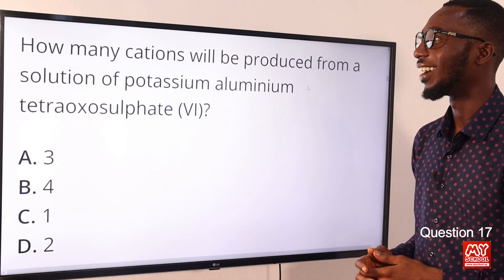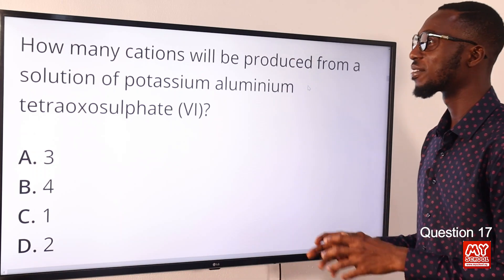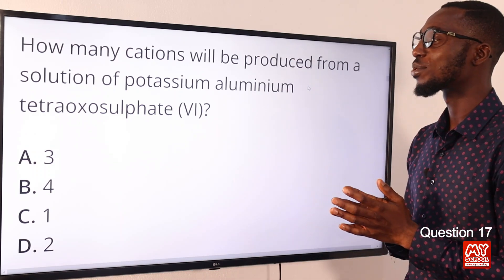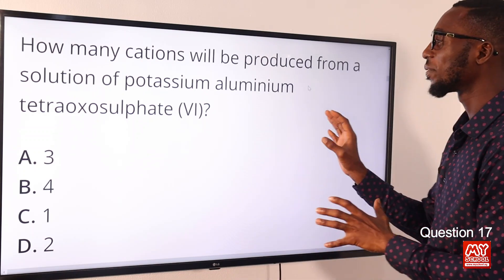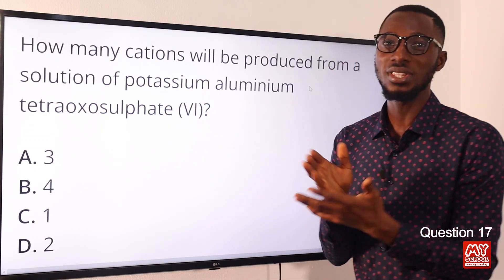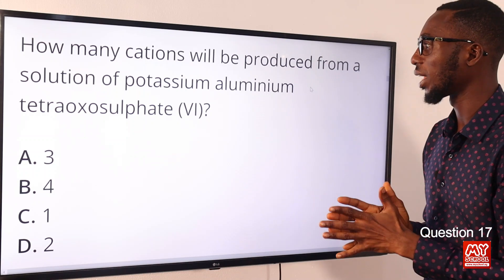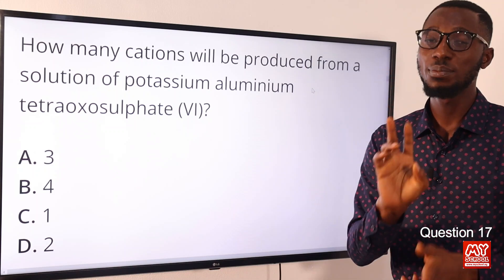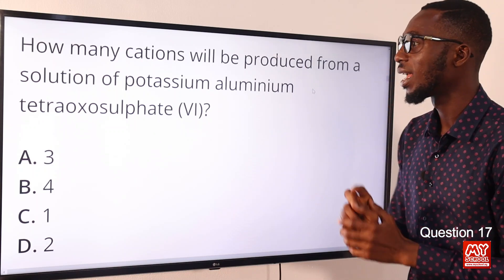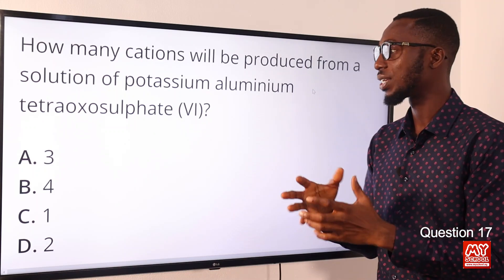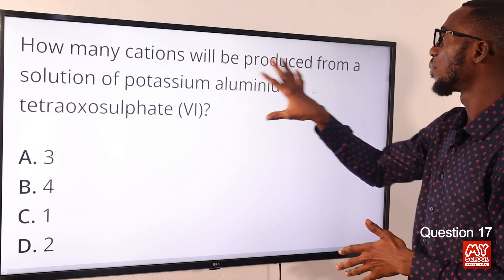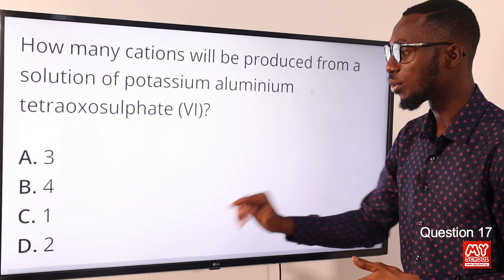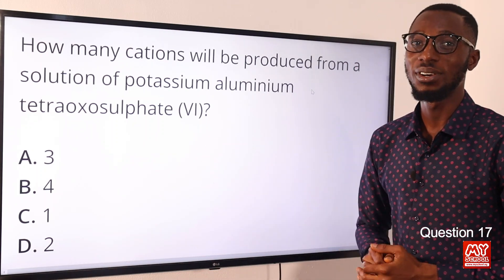Question 17: How many cations will be produced from a solution of potassium aluminium sulfate (alum)? This is a double salt. A double salt, when ionized in solution, produces two cations (positively charged ions) and one anion (negatively charged). So how many cations will be produced? The answer is two. That is found in option D. Option D is the correct answer.